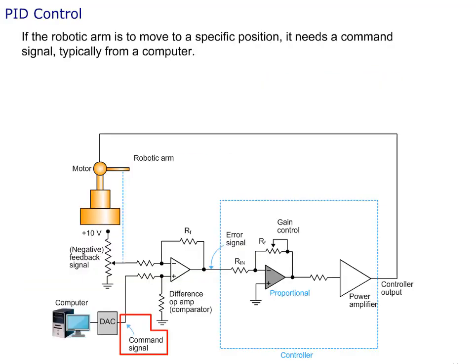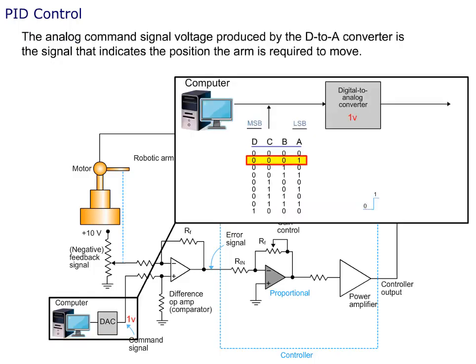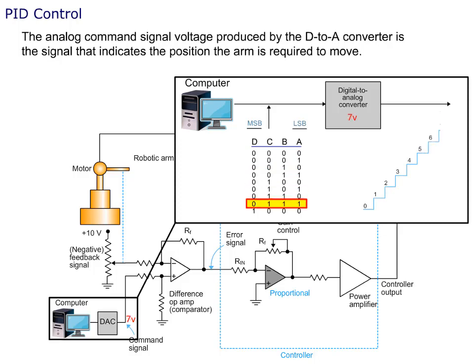If the robotic arm is to move to a specific position, it needs a command signal, typically from a computer. The analog command signal voltage produced by the D-to-A converter determines the position the arm is required to move to.